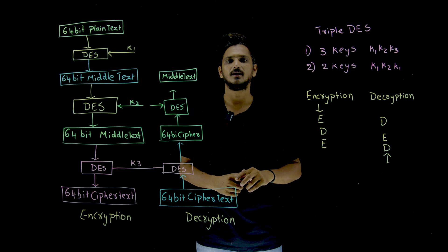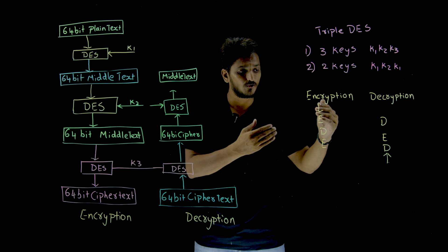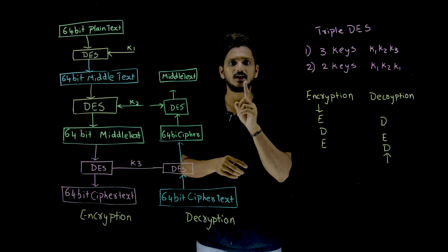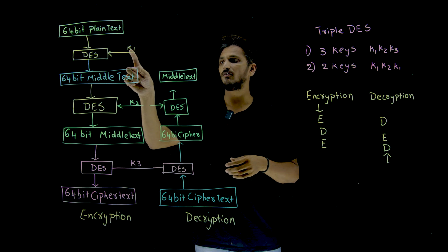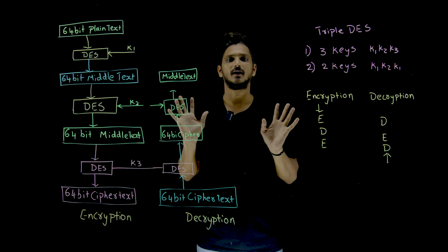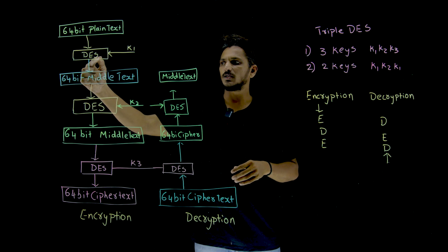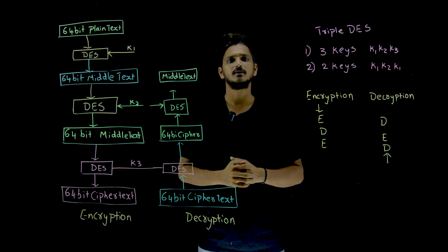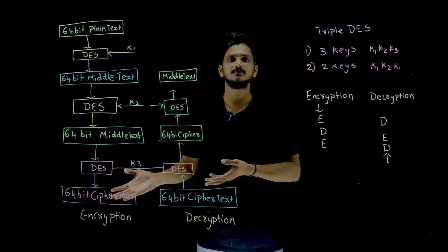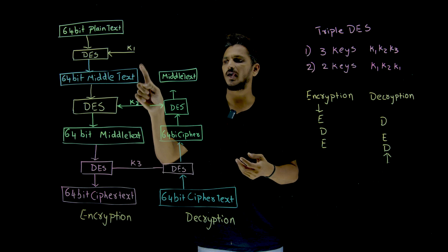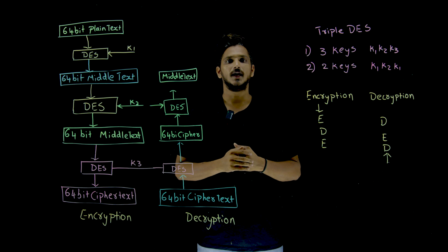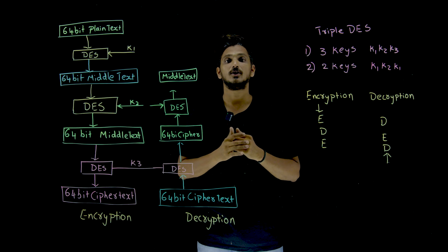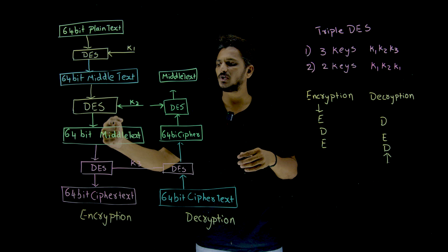Why is this EDE structure compatible with the existing DES? In DES we have only one key, K. Suppose you take K1, K2, and K3 all as the same single value K. Then the encryption in layer one and the decryption in layer two cancel out, and the encryption in layer three gives you the same output as plain DES. So Triple DES can be used exactly as DES if you provide a single key. That is why they use the Encrypt-Decrypt-Encrypt pattern — to provide that backward compatibility.